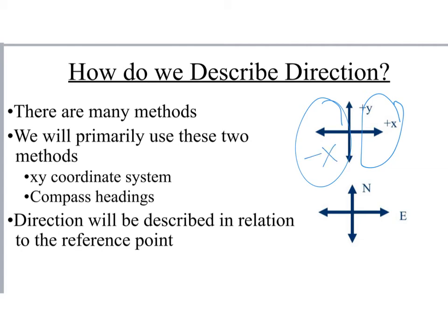The other way we might describe motion is with our compass headings. So you've got north, east, south, and west. I remember this as never eat soggy waffles. And we're always going to describe the direction in relation to another reference point. So we might say northeast of the horizon or something to that effect.